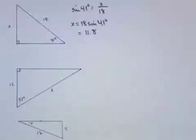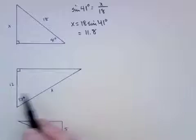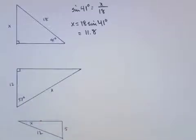Second example. We have another right triangle with a 57 degree acute angle, an unknown hypotenuse length, and an adjacent side of length 12.